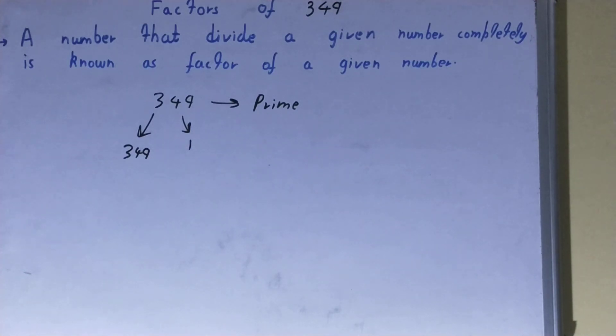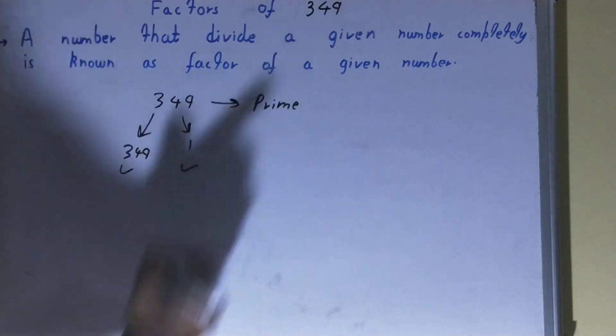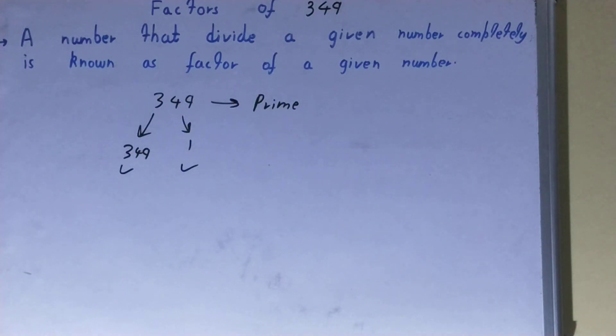So we can say that the factors of the number 349 will be 349 and one. So this was all about factors of the number 349. If you found the video helpful, please do hit the like button, consider subscribing, and thanks for watching.